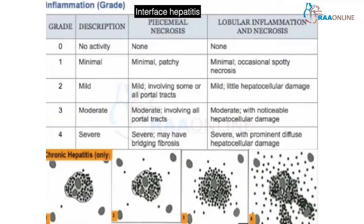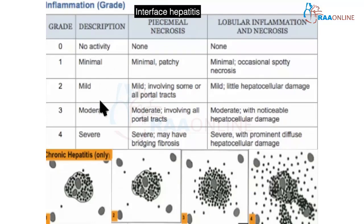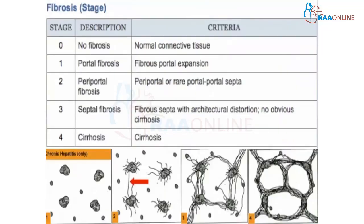This is the grading of hepatitis: one-third, more than one-third, more than two-thirds, and extensive — corresponding to minimal, mild, moderate. Keep this picture; it is very important to grade the hepatitis activity. And this table is for fibrosis staging.